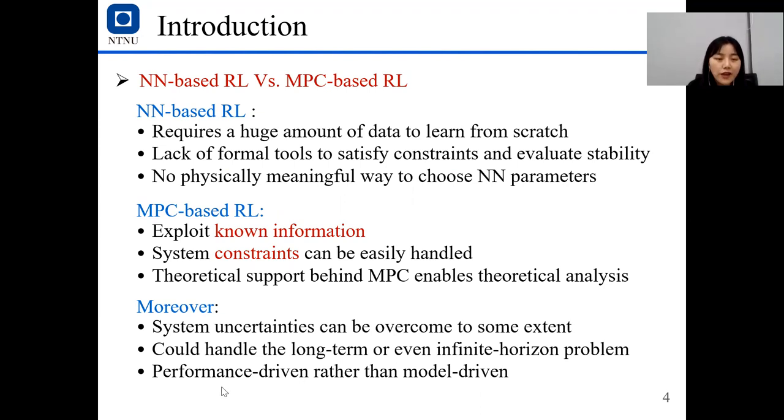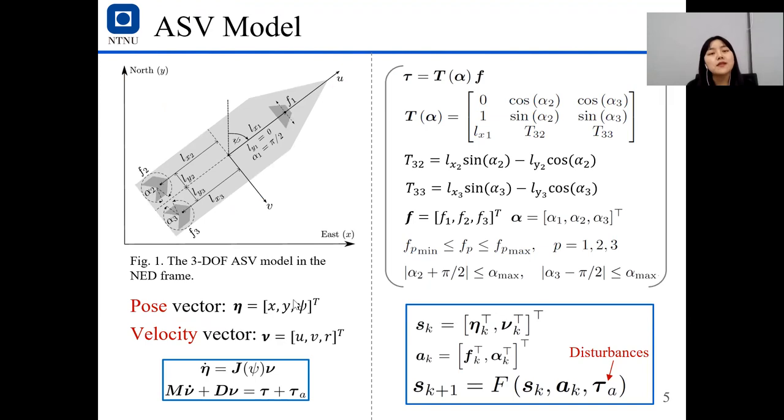This is an ASV model. They have pose vector eta and velocity vector nu, and this is a real dynamic system. Where T(R,5) is a configuration matrix, we have two inputs. One is the force of the thruster, and the other is the angle of the three thrusters, and we have some constraints on both force and angles. And this is a general system. We have state, input, and the dynamics function F, where tau_a is the disturbance rendered from maybe ocean waves or wind.